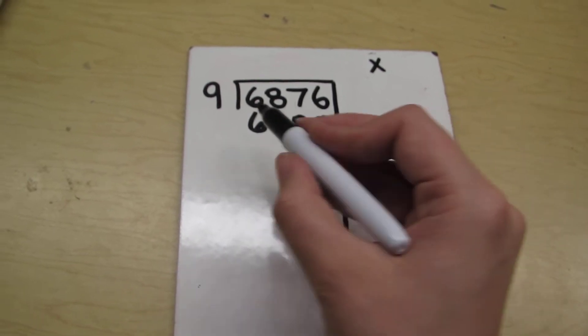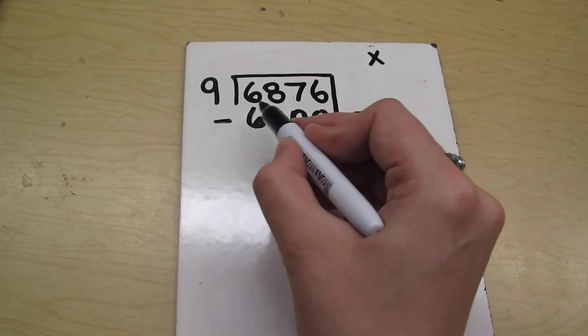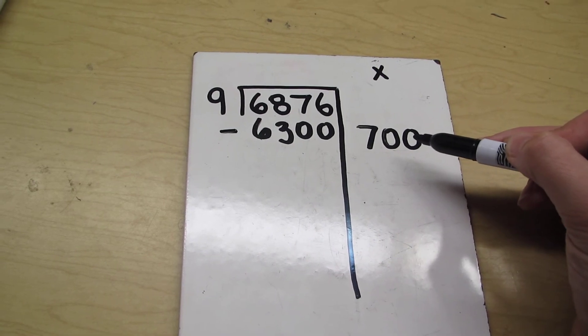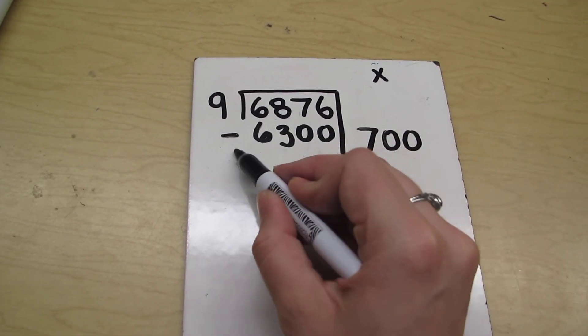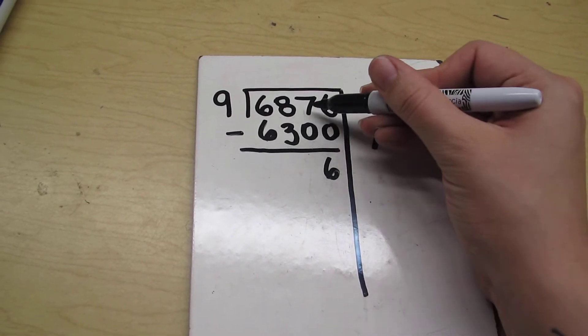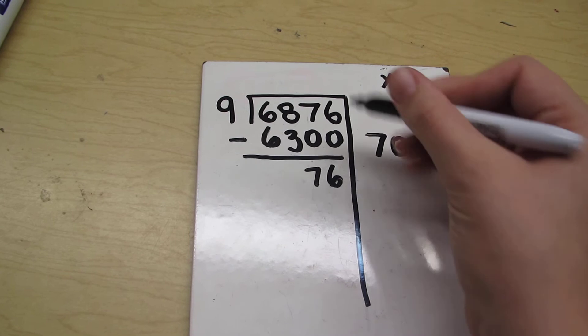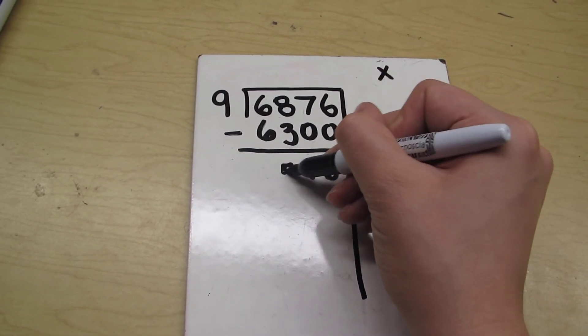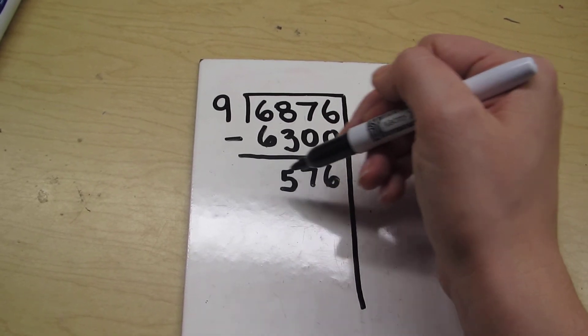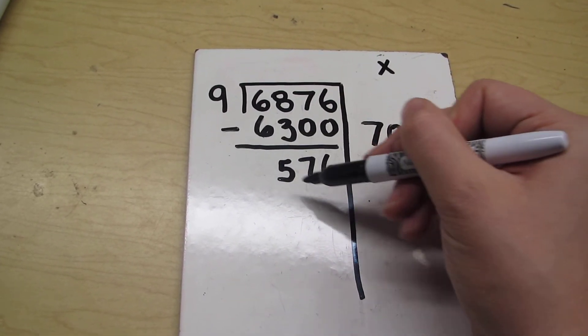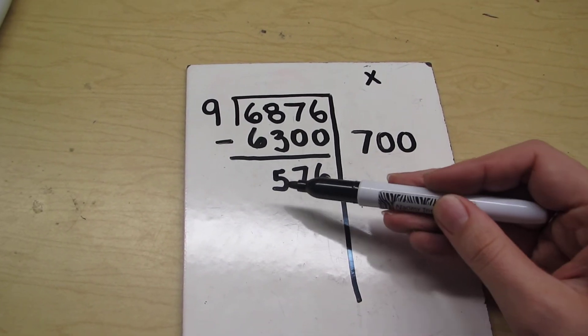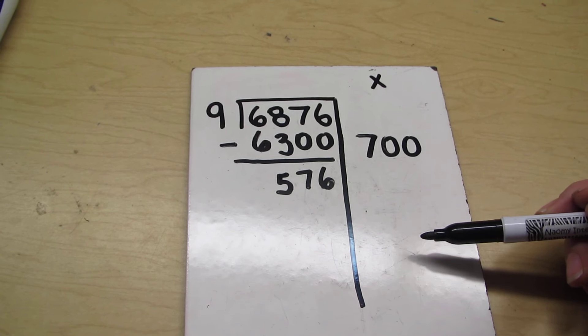So our next step is that we're going to subtract. This is where the subtraction happens, and again, this is where the multiplication happens. So we're going to do, put a line here first. 6 minus 0 is 6. 7 minus 0 is 7. 8 minus 3 is 5. And, of course, 6 minus 6 is 0, but I won't put the 0 there because I know that it's 0, and I want to work with this number that's left. Now we have 576 we're going to work with.